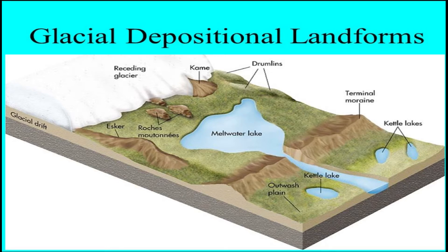The cons include that glacial features form rugged terrain, which is not suitable for transportation or human settlement. Also, temperatures in these areas fall below zero, which is quite unsuitable for human settlement. With that, let us dive in more and look at what a glacier is and how a glacier is formed.